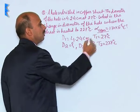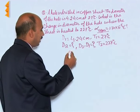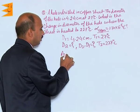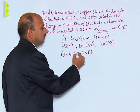Value of coefficient of linear expansion of copper is this much. So here we can write A2 is equal to A1 into 1 plus beta delta T, that is change in temperature.